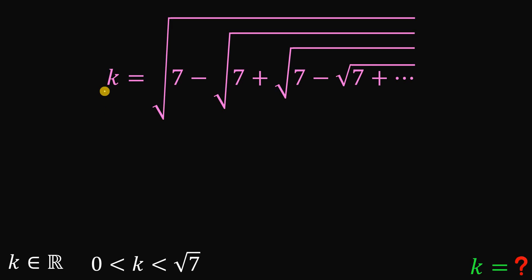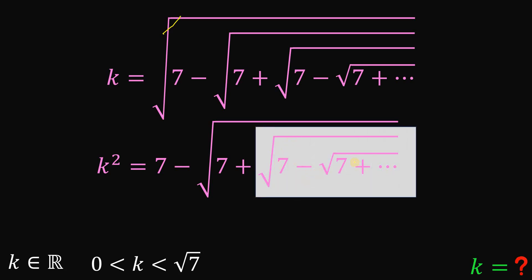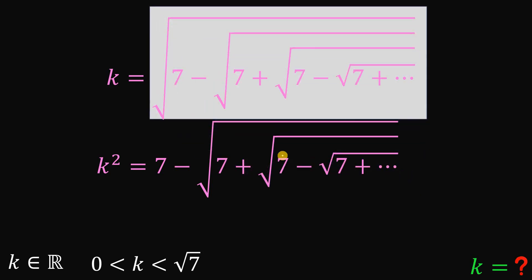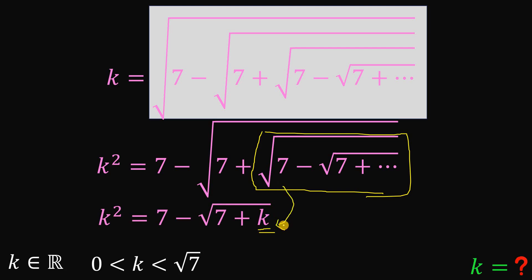Let's square both sides. We get k squared equals 7 minus the square root of 7 plus the square root of 7 minus the square root of 7 plus, until infinity — this square root cancels out. Now, notice that this inner part — the square root of 7 minus the square root of 7 plus the square root of 7 minus, etc. — is the same thing as k. So we can rewrite it as k. We have k squared equals 7 minus the square root of 7 plus k.